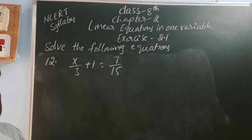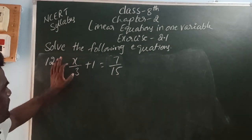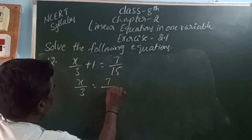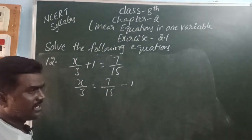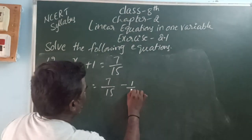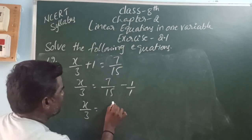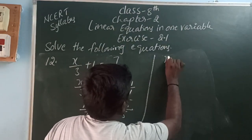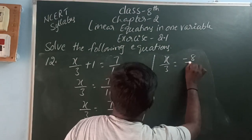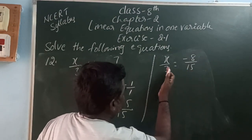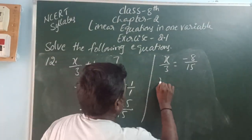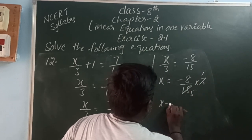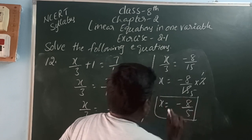x by 3 plus 1 is equal to 7 by 15. Here, the variable is divided by constant 3. Plus 1 is moving to the right side and it becomes minus. So x by 3 is equal to 7 by 15 minus 1. Any number divided by 1 gives the same number, so 1 can be written as 1 by 1. So x by 3 is equal to 7 by 15 minus 15 by 15, which is minus 8 by 15. The divide 3 is moving to the right side and it becomes multiple. So x is equal to minus 8 by 15 into 3, which simplifies to x is equal to minus 8 by 5. This is the value of the variable.